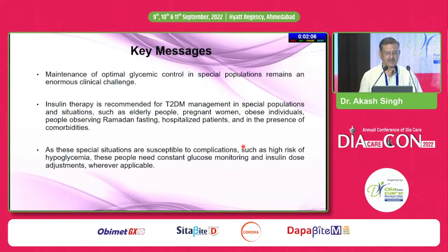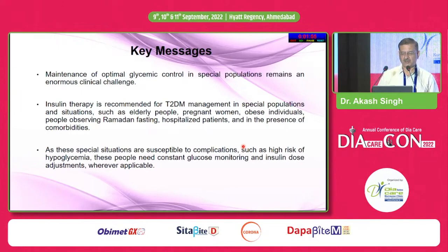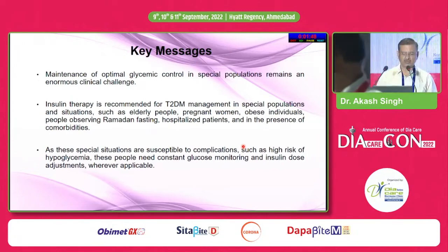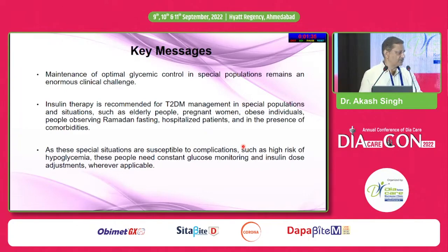In conclusion, maintenance of optimal glycemic control in special situations remains an enormous clinical challenge. Insulin therapy is recommended for type 2 diabetes management in special populations and situations such as elderly people, pregnant women, obese individuals, those observing Ramadan fast, hospitalized patients, and those with comorbidities. As these special situations are susceptible to complications such as high risk of hyperglycemia, these people need constant glucose monitoring and insulin therapy where applicable. Thank you very much.